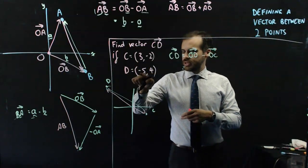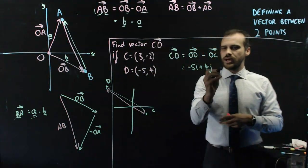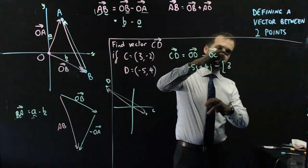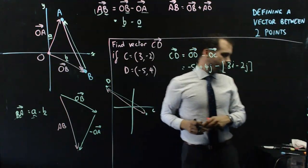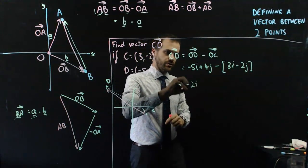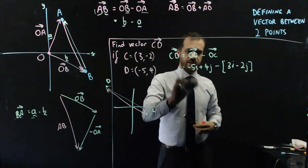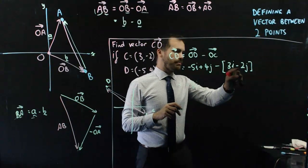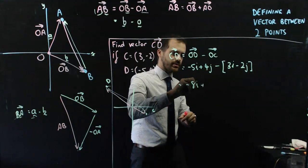And now we just need to know what vector OD and OC are. OD is -5i plus 4j, and now we're going to subtract vector OC which is 3i minus 2j. Okay, -5i minus 3i is -8i and 4j minus -2j is 6j. 4j minus minus is plus 6j.